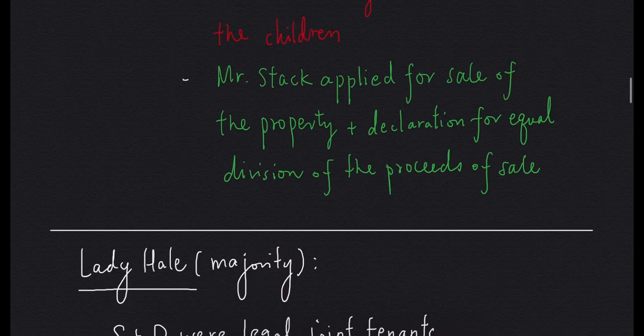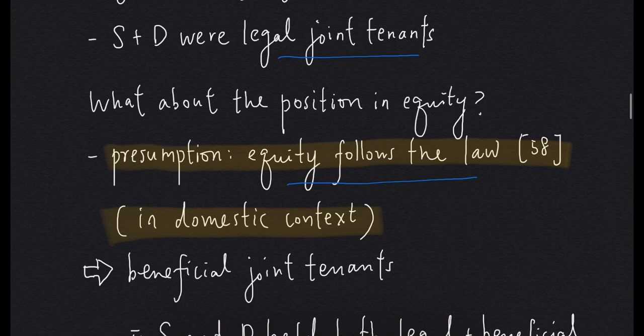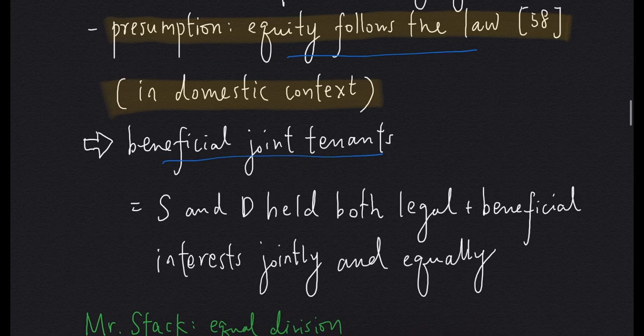Lady Hale gave the leading judgment for the majority. According to Lady Hale, Mr. Stagg and Ms. Dalton were legal joint tenants. But what about the position in equity? The rule is equity follows the law. This is the presumption that should be applied in the domestic context. So Mr. Stagg and Ms. Dalton are beneficial joint tenants, meaning they held both legal and beneficial interests jointly and equally.